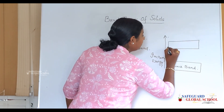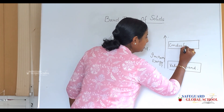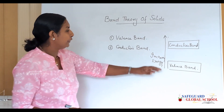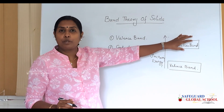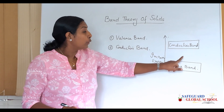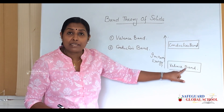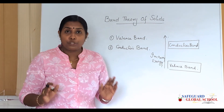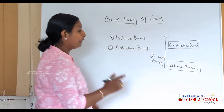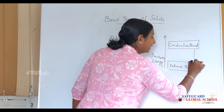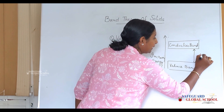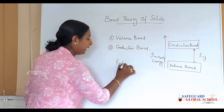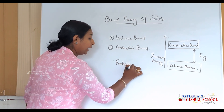The conduction band will sometimes be empty, but when electrons gain energy they can be transferred from the valence band to the conduction band. Clearly, there is a space between the valence band and the conduction band where no electrons or charge carriers are found.